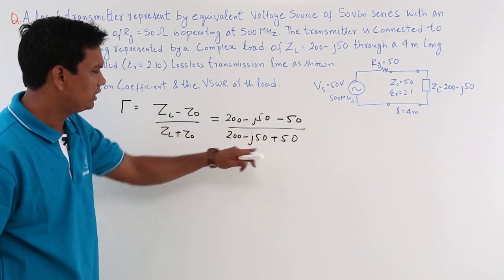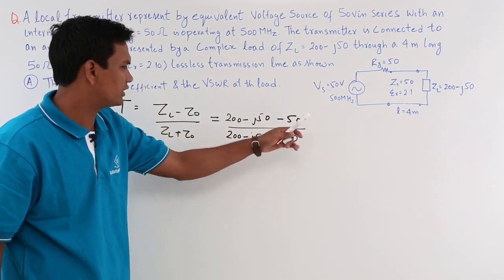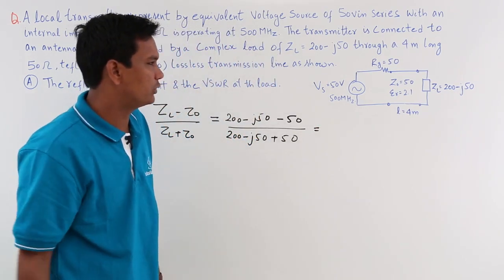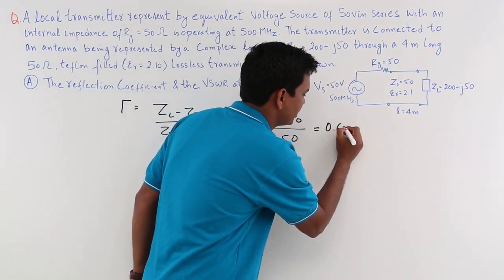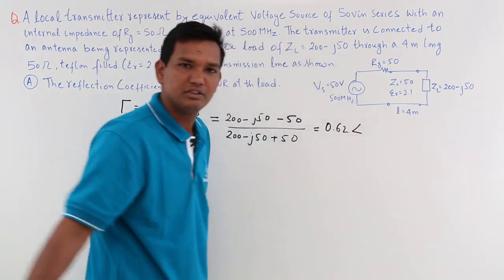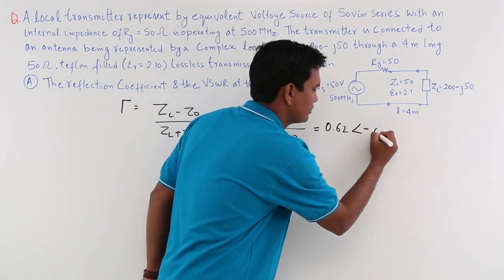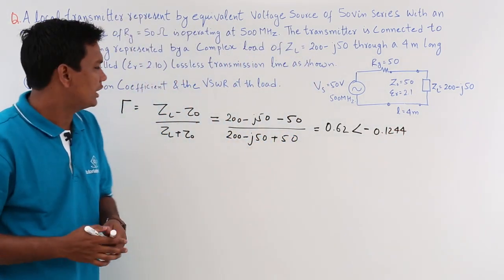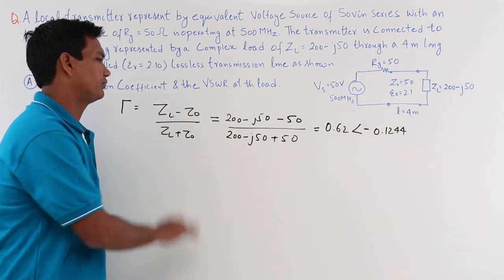This will be a complex term. You can simplify, use your calculator and solve this. If you solve this, on solving you will get 0.62 at an angle of minus 0.1244. This is the reflection coefficient.